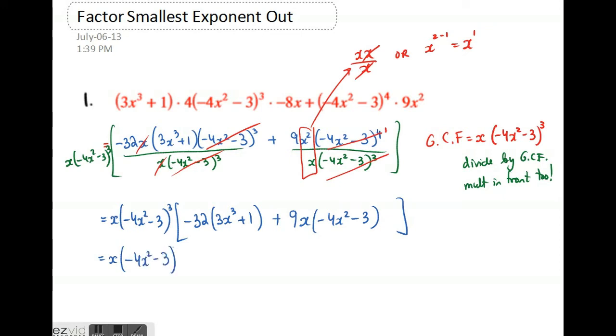The very last bracket has to be expanded out, so the inner brackets give us negative 96x cubed minus 32 minus 36x power 3 minus 27x. There are some like terms to combine as well.